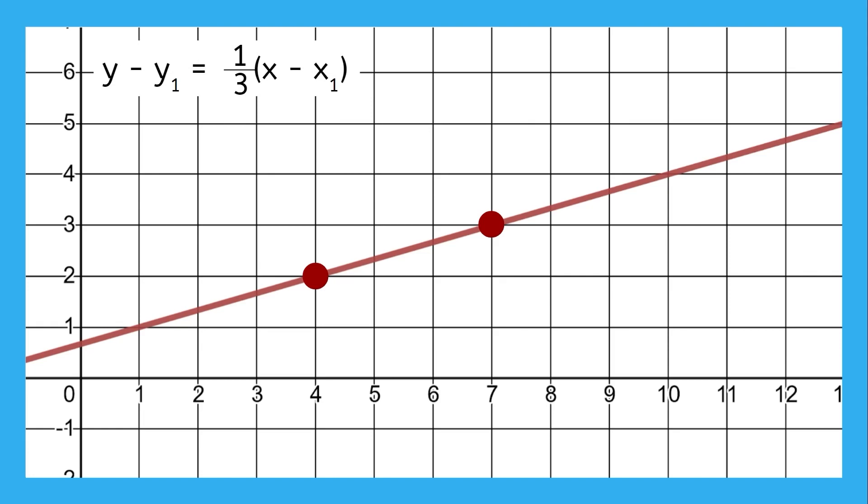And now remember, any point on the line works. If we use this point, then the equation will be y minus 2 equals 1 over 3 times x minus 4. And if we use this point instead, then the equation will be y minus 3 equals 1 third times x minus 7. Both of these equations represent the exact same line. The only difference is which point was used to write the equation. Try solving both equations for y. You'll see they come out to the same equation in slope-intercept form.